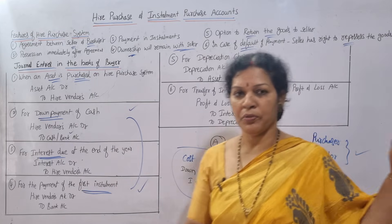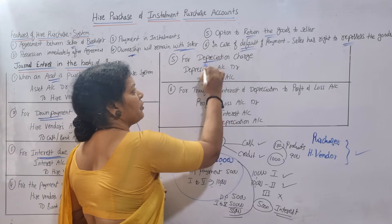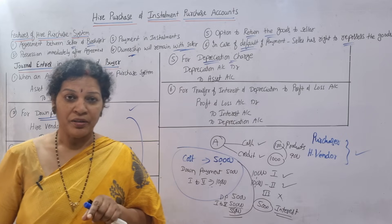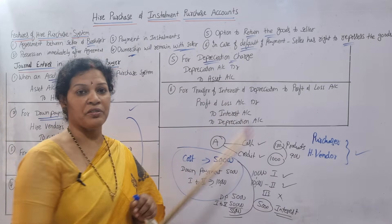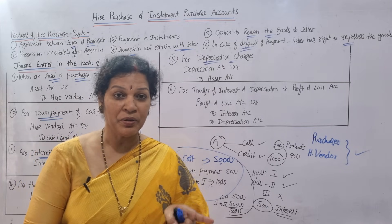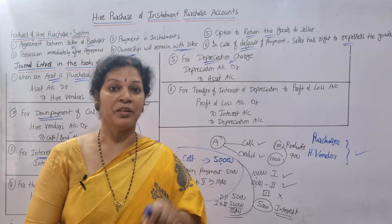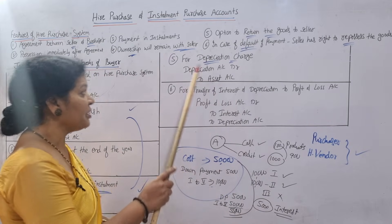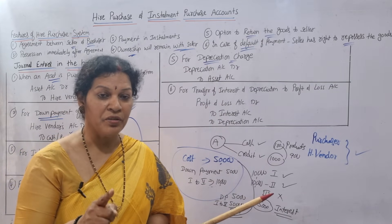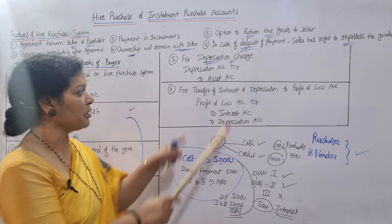The fifth entry is for depreciation. You must also provide depreciation on the asset. The entry is — Depreciation Account debit, to Asset Account credit. Whenever you open the Asset Account, depreciation appears on the credit side — this is the same as what you learned in the depreciation chapter.